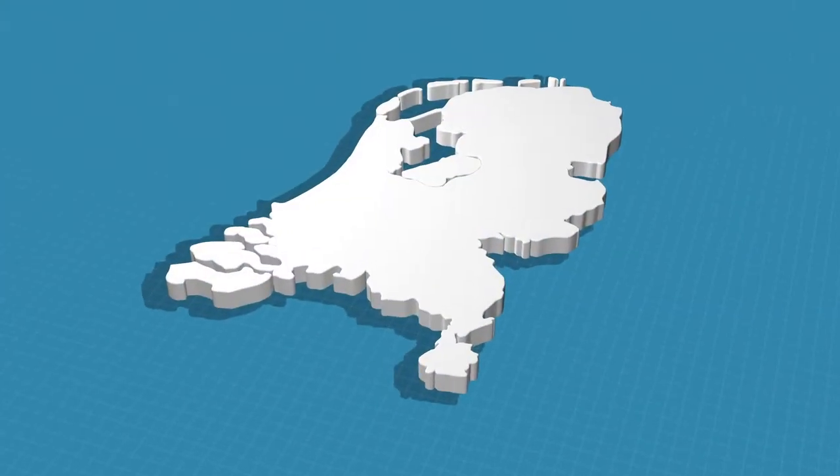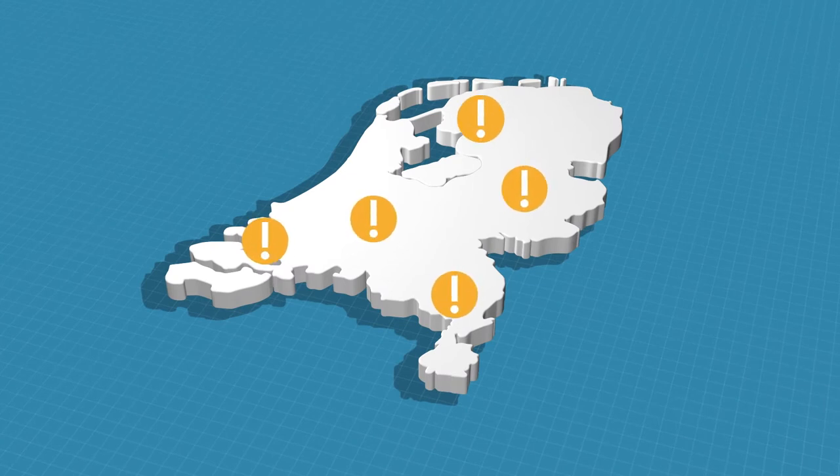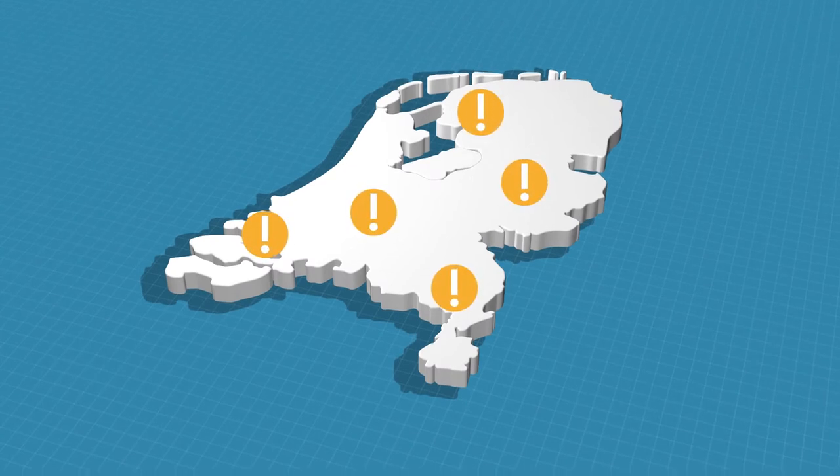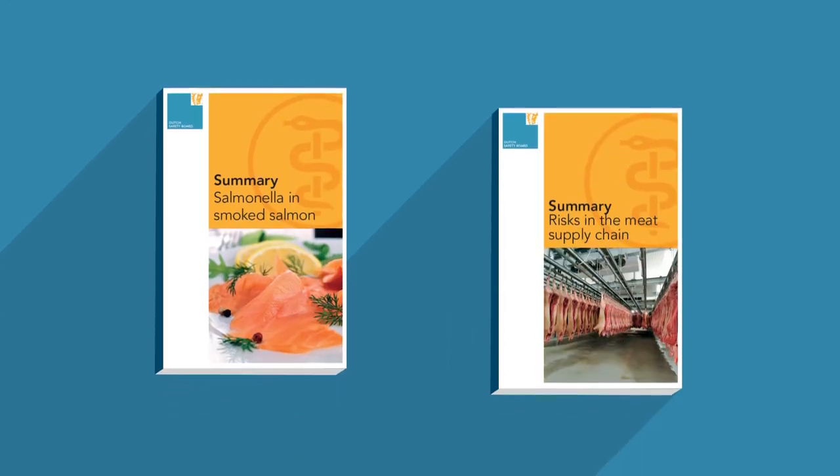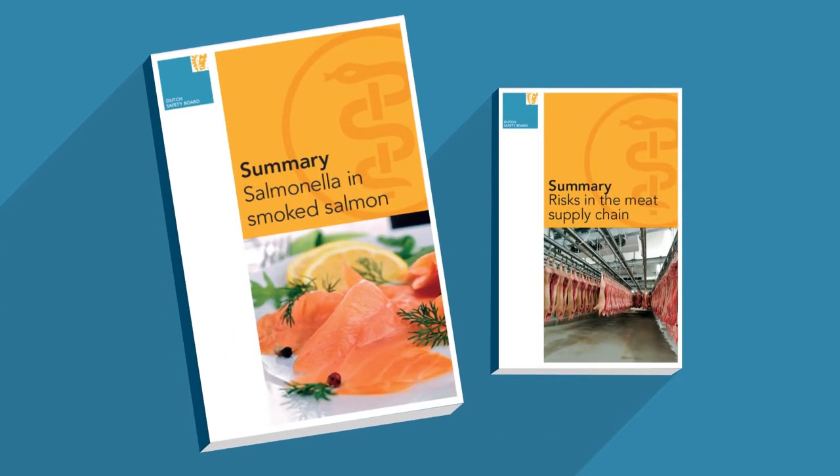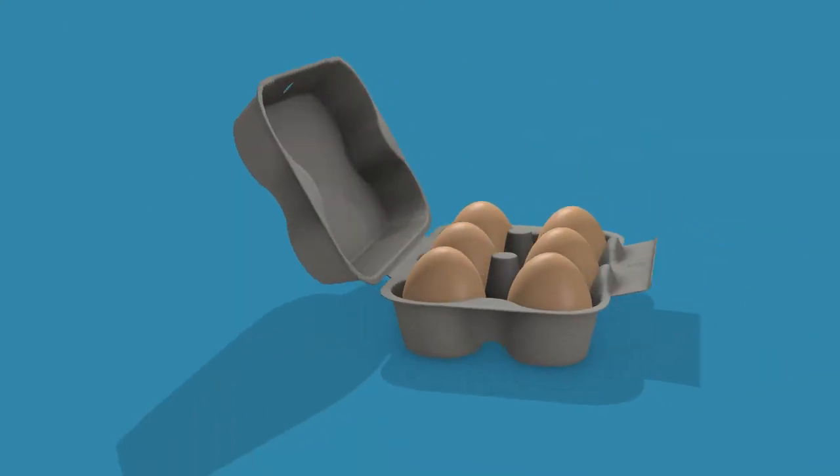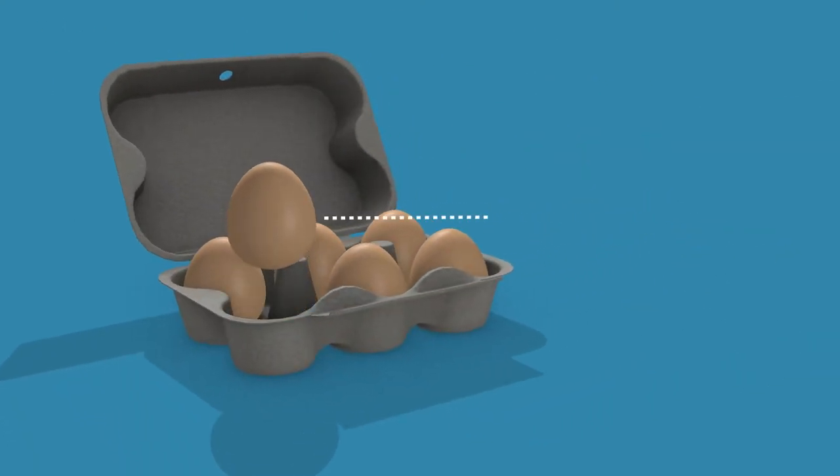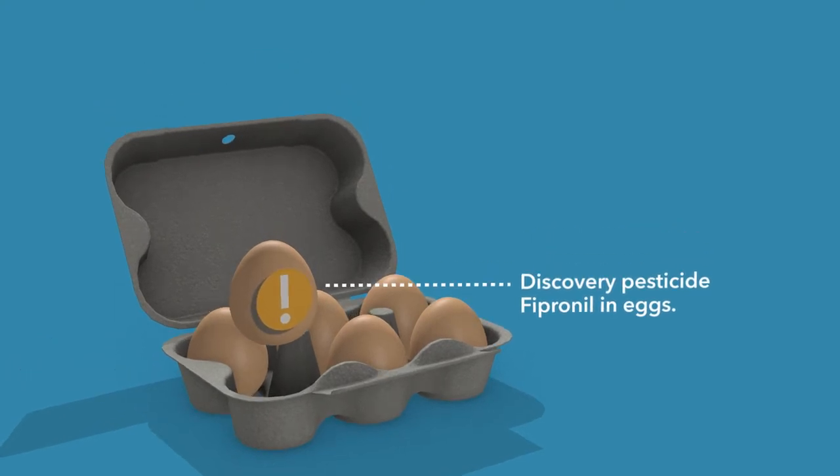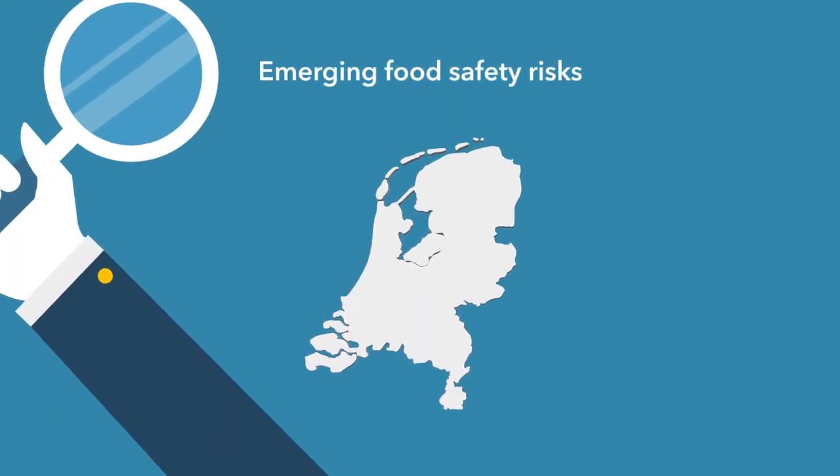In recent years, the Netherlands has been alarmed on several occasions by food-related incidents. The Dutch Safety Board has previously investigated salmonella in smoked salmon and risks in the meat supply chain. The discovery of the pesticide fipronil in eggs in summer 2017 prompted the Board to take a broader look at emerging food safety risks in the Netherlands.